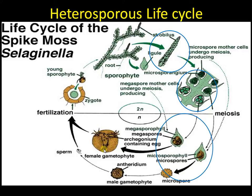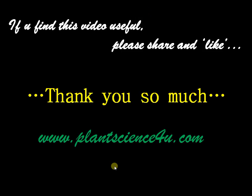The microspore germinates to form the male gametophyte bearing the antheridium. Sperm and egg fuse to form the zygote, and the zygote later divides to form the mature sporophyte. The only difference in this life cycle is that there are two types of spores giving rise to a male gametophyte and a female gametophyte separately — that is the major difference. Thank you so much for watching.